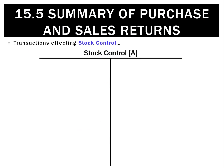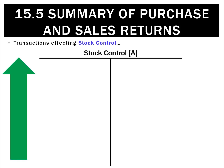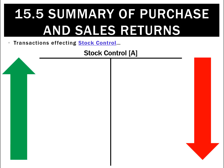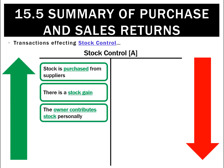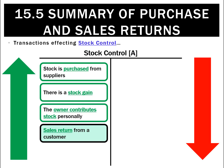Now let's summarize what we know about the stock control ledger. It goes up on the debit side and down on the credit. What entries make it go up? When we buy stock, that increases it. We could have a stock gain, we could contribute stock ourselves, or we could have a sales return, which is what we learned in this chapter.